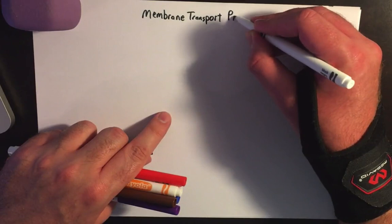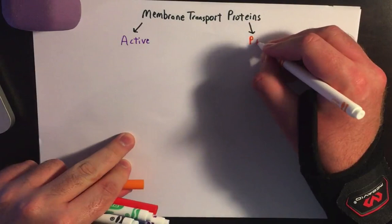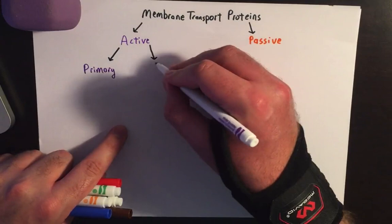Membrane transport proteins are often talked about in textbooks, but very rarely are they actually classified and defined. So with this, I went ahead and branched it off into both active and passive membrane transport proteins. For active transport, we have primary and then secondary classification.